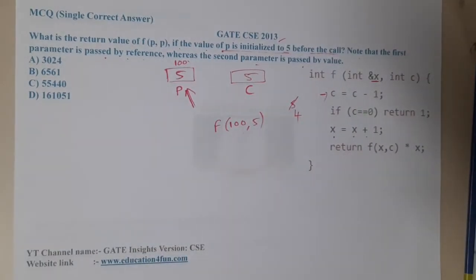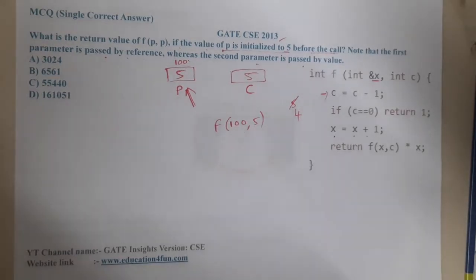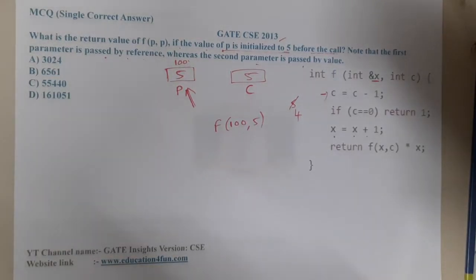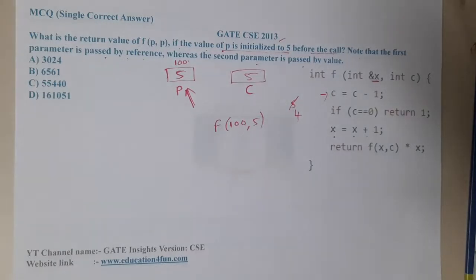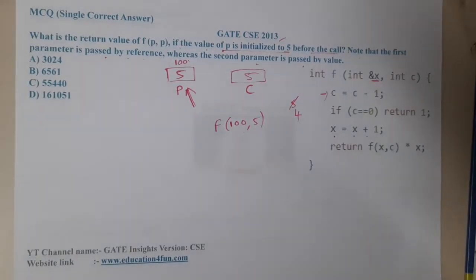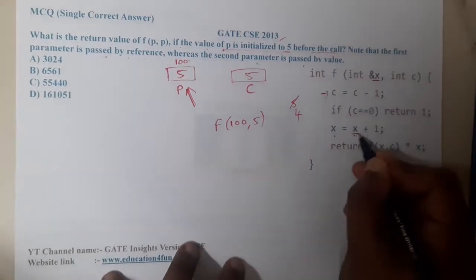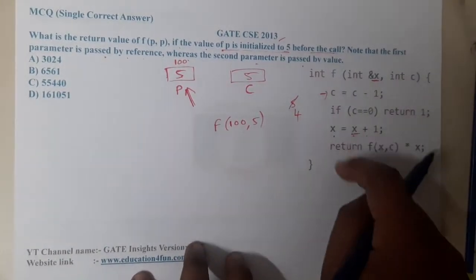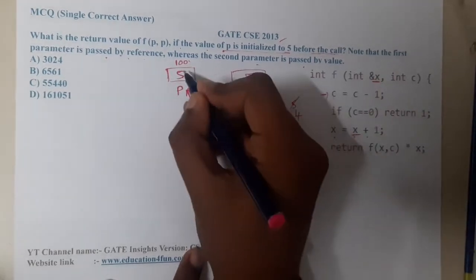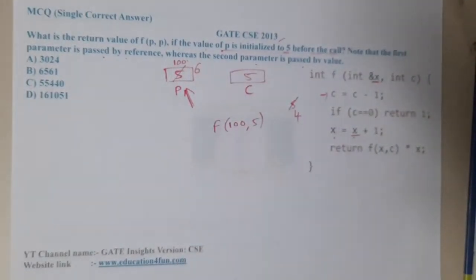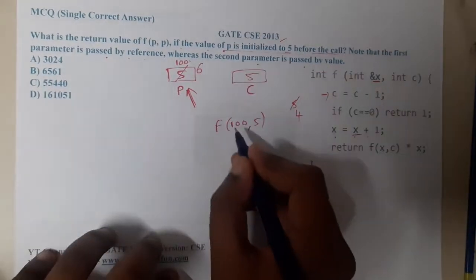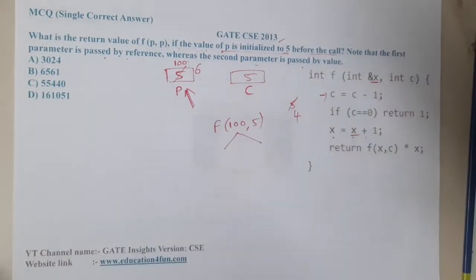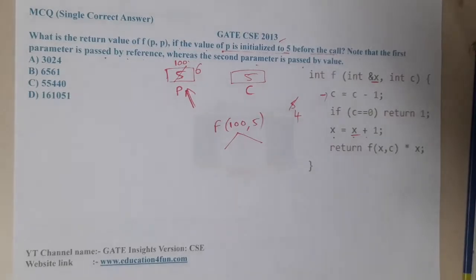Here we are doing x equals x plus 1. What is the value of x? x is a pointer, so this step might be a bit confusing. For now, let us assume x is address of x. It will be updating this value to 6.